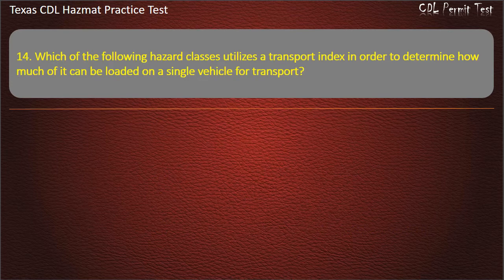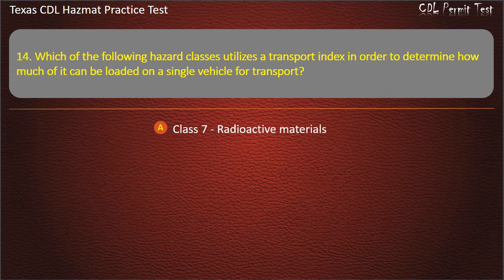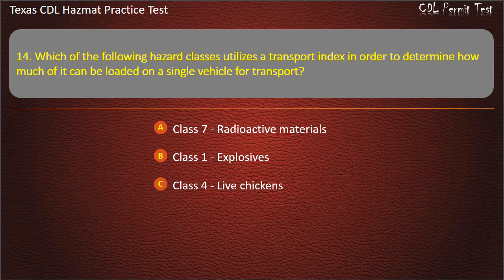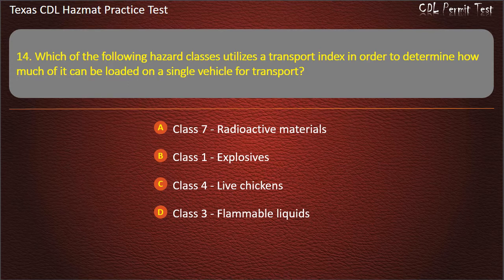Question 14: Which of the following hazard classes utilizes a transport index in order to determine how much of it can be loaded on a single vehicle for transport? Class 7 Radioactive materials. Class 1 Explosives. Class 4 Live chickens. Class 3 Flammable liquids. Answer: Class 7 Radioactive materials.